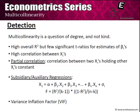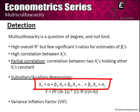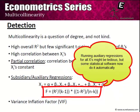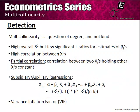In an auxiliary regression, one regressor — say x1 — is regressed on the remaining regressors x2, x3, ..., xn. Once this regression is run, we obtain an R-squared value and test its significance using an F-test: F = [R²/(k−1)] / [(1−R²)/(n−k)], where n is the sample size and k is the number of parameters. If R-squared is significantly different from 0, then x1 is linearly dependent on the other regressors, indicating multicollinearity.